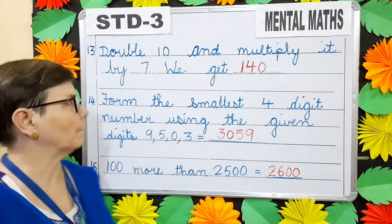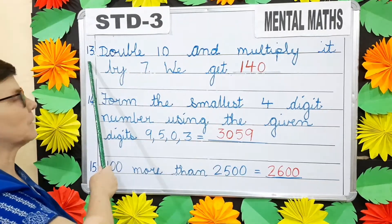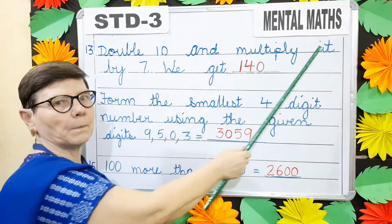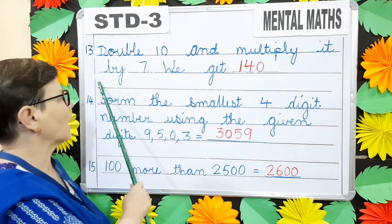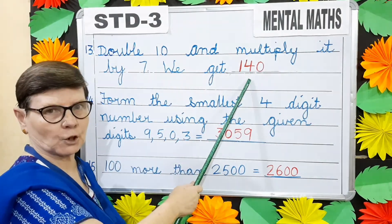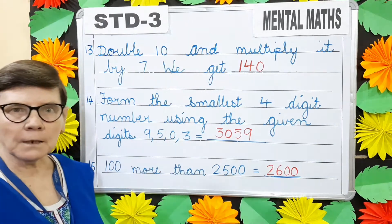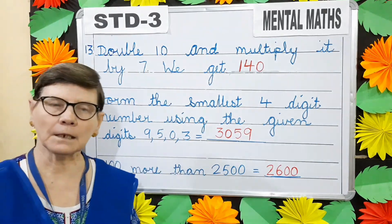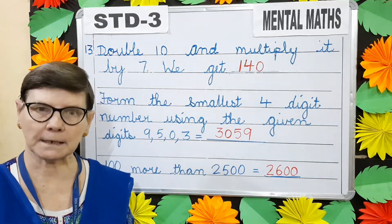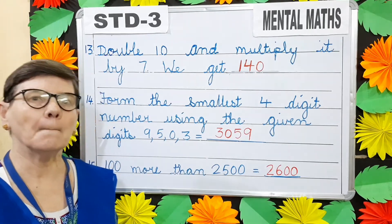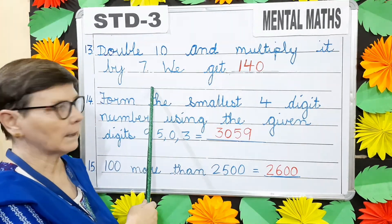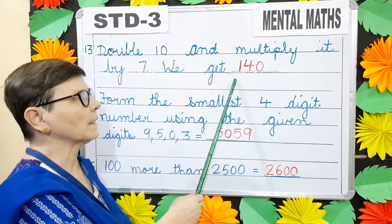Question number 13: Double 10 and multiply it by 7. We get dash. Double 10 means 10 plus 10 will give you 20. 20 multiplied by 7, we get 140.